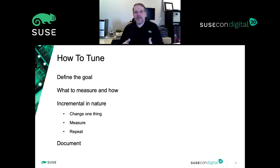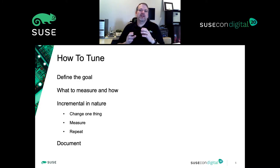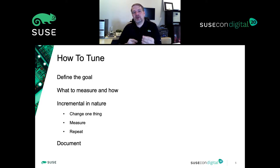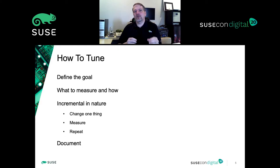After you've defined the goal, you need to determine what you're measuring and what tools to use. Think in depth about what is an important metric. When you're tuning for latency, throughput probably isn't as big a concern as getting responses back quickly. So that determines what to measure, and then you think about the tooling.